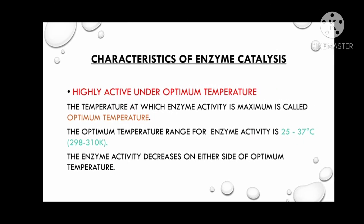In the next characteristic feature, enzyme catalysis is highly active under optimum temperature. The temperature at which the enzyme activity is maximum is called optimum temperature. The optimum temperature range for enzyme activity is 25 to 37 degrees Celsius, which is 298 to 310 Kelvin. The body temperature is 37 degrees Celsius.